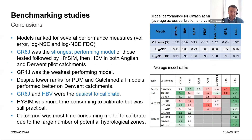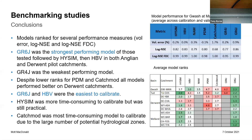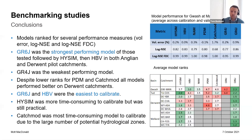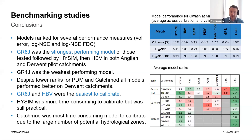So the conclusions of the benchmarking studies. We took those performance metrics — volume error, log NSE, and the FDC statistic — calculated for both calibration and validation periods. The models are ranked and then the average rank was calculated. The table summarising the various models and rankings for the different catchments shows that not all models were applied for all catchments — the full seven were applied originally for the Gwash and the Tad in the Anglian region. GR6J very much came out as the strongest performing model in both areas. HiSIM then HBV followed in second and third place. That was a pretty consistent conclusion between both regions and the catchments we were looking at.